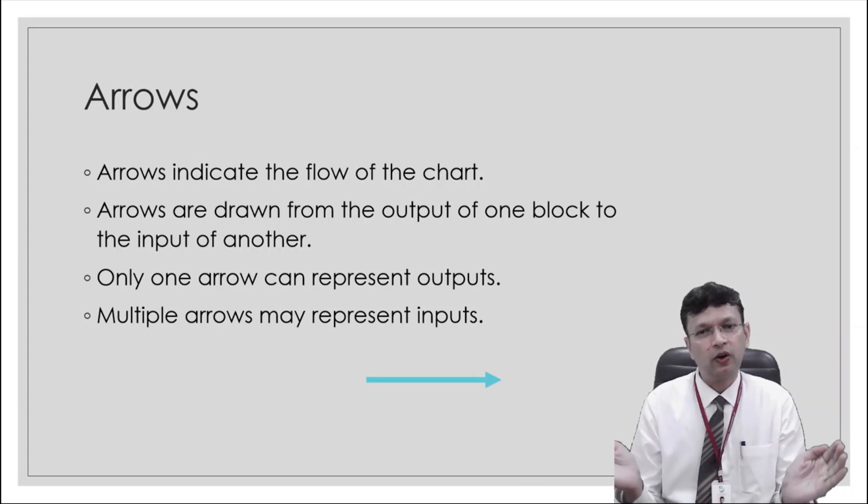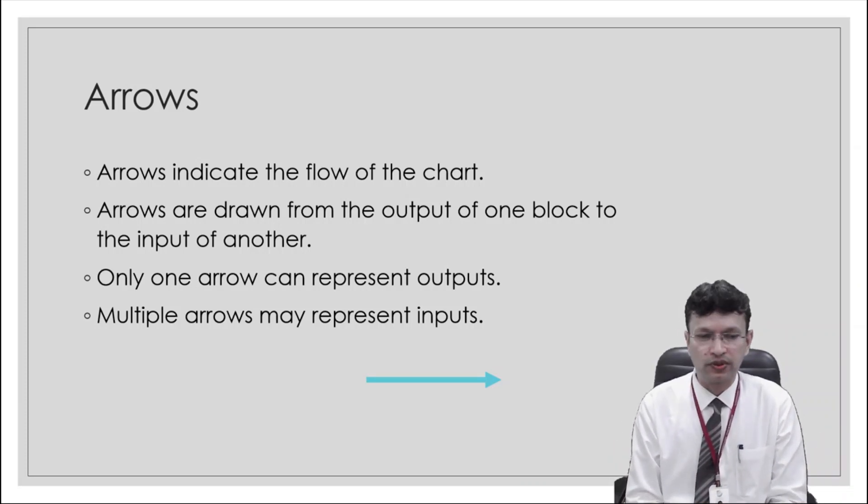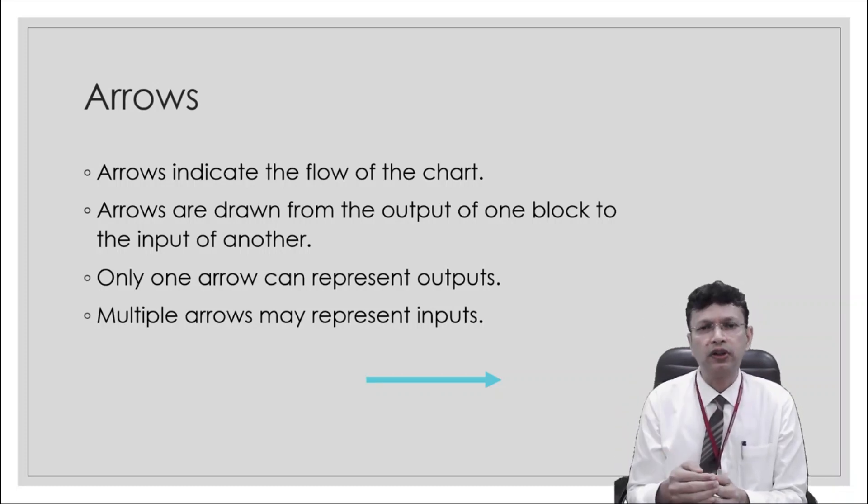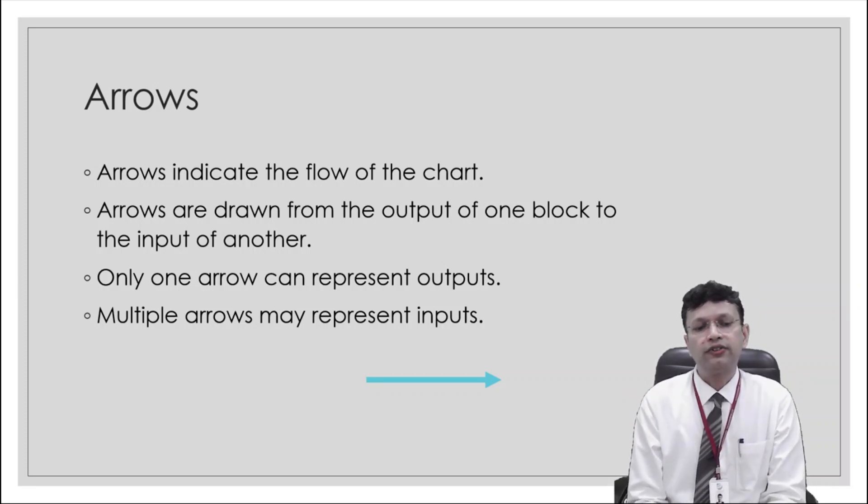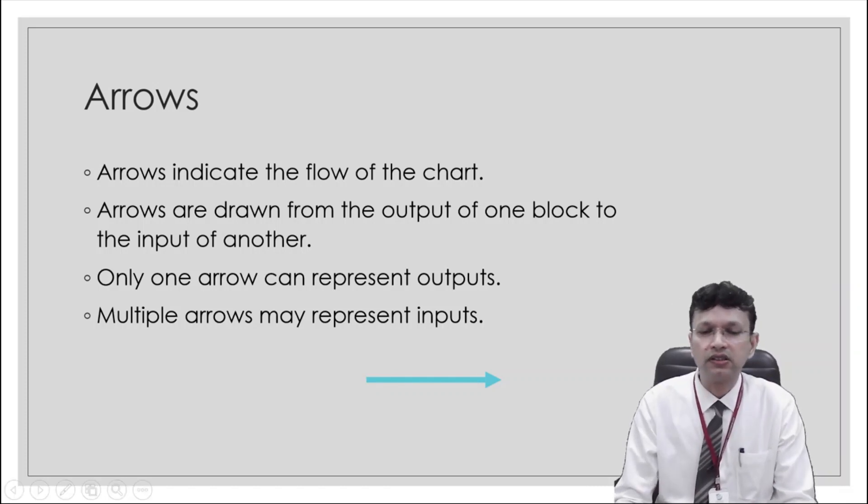And to connect all these things we'll be needing arrows. So arrows indicate the flow of the chart like how it is flowing. The flowchart generally is top down but we can have sideways as well. But generally it is drawn from the top to the bottom. Arrows are drawn from output of one block to the input of another. Only one arrow can represent outputs. Multiple arrows may represent inputs.